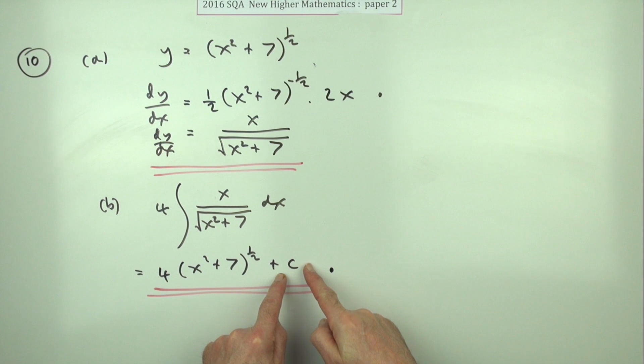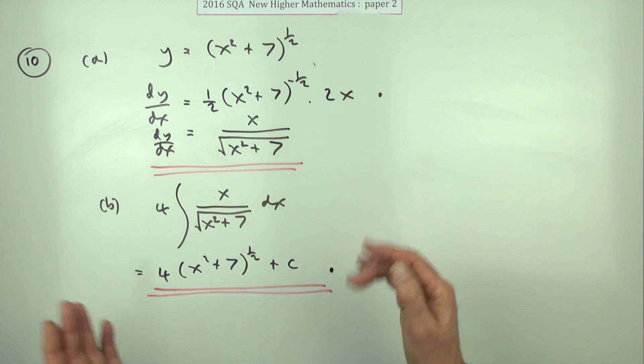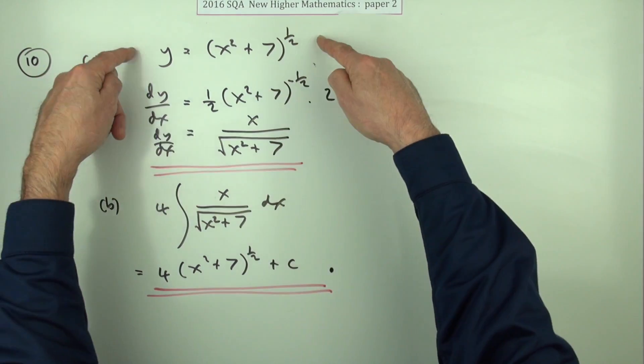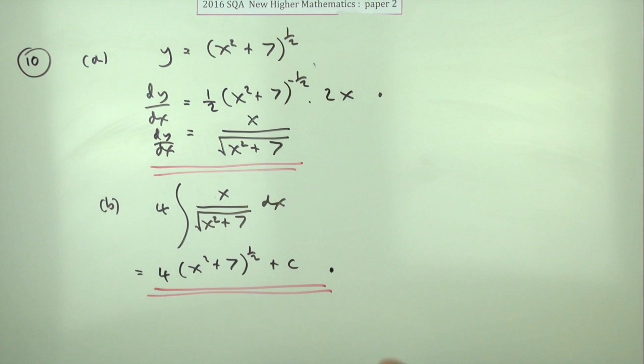Doesn't mention what would happen if you didn't put a plus c in the marking scheme. Since there's only one mark for this, it seems to imply, because it's got it in a bracket in the marking scheme, that if you forgot to put that in, you'd still get the mark because you've got the essence of the question, which was to realize that the integration means going back to the original, and you do know the original.